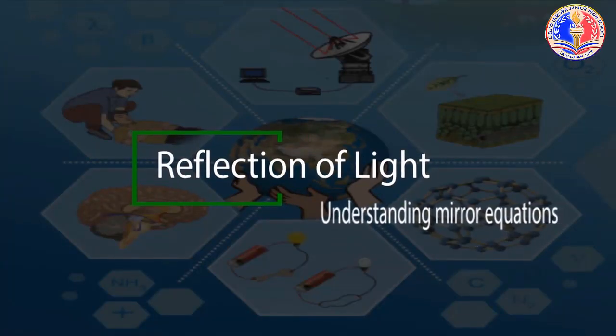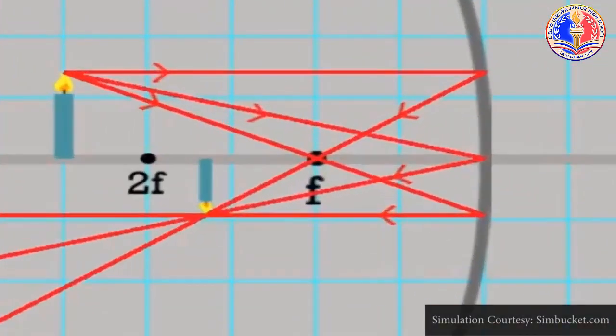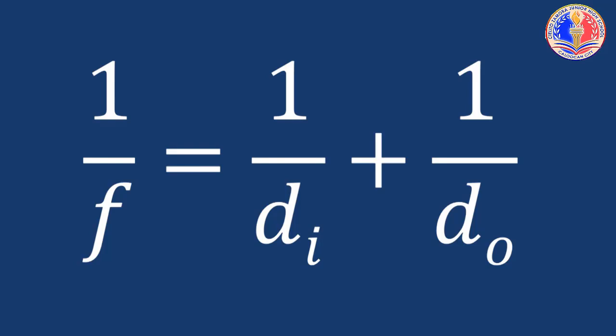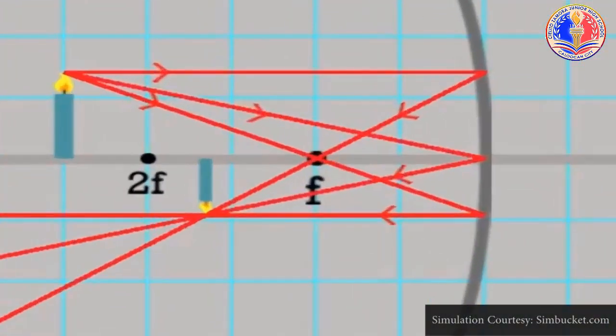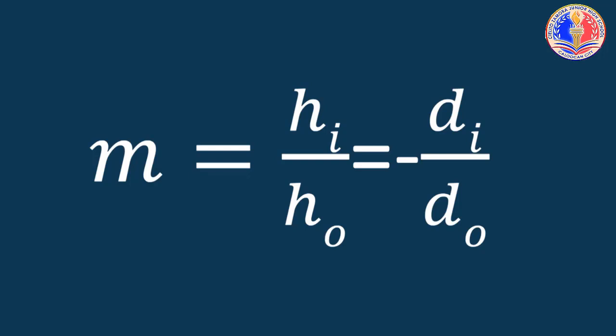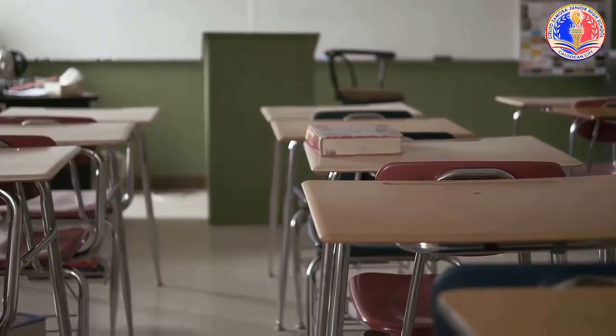Mirror equation and the magnification equation. The mirror equation expresses the quantitative relationship between the object distance, dO, the image distance, dI, and the focal length, f. It is expressed as 1 over f is equal to 1 over dI plus 1 over dO. The magnification equation relates the ratio of the image distance and object's distance to the ratio of the image height and the object's height. It can be written as m is equal to dI over dO. The sign conventions for the given quantities in the mirror equations and magnification equations are as follows.